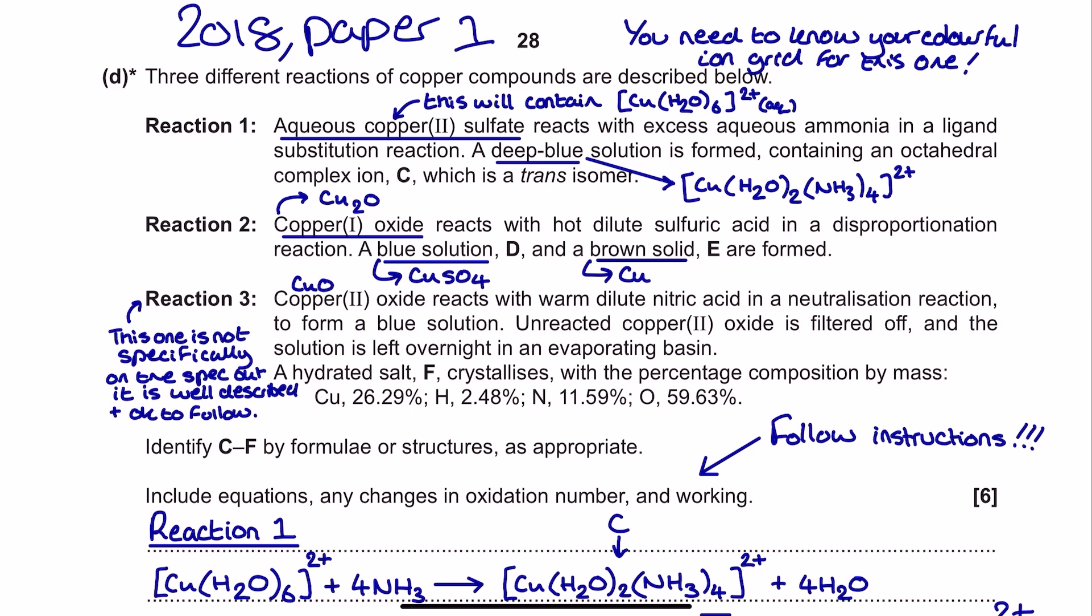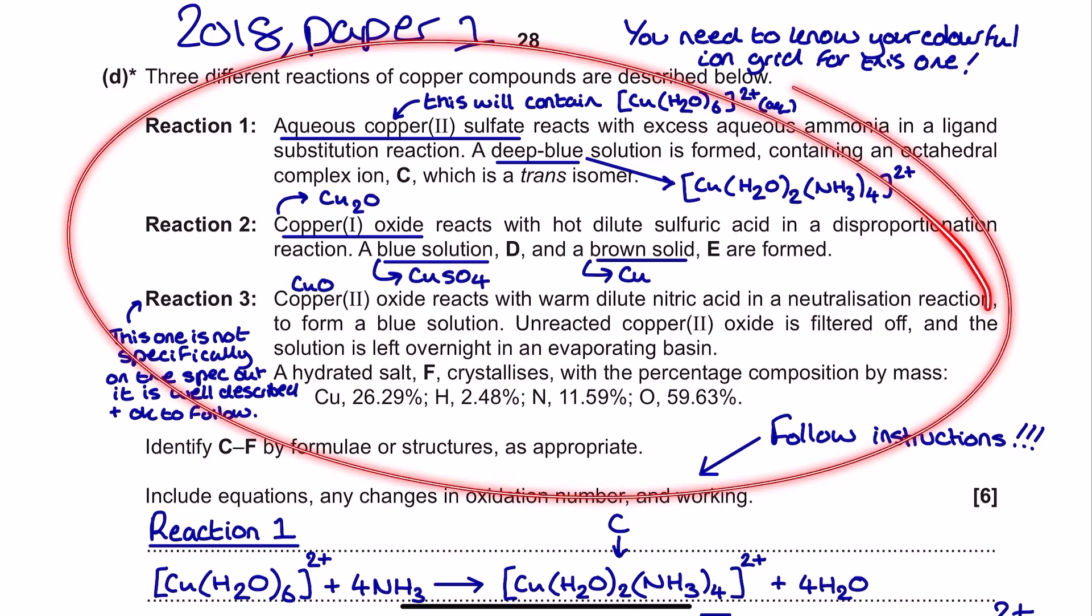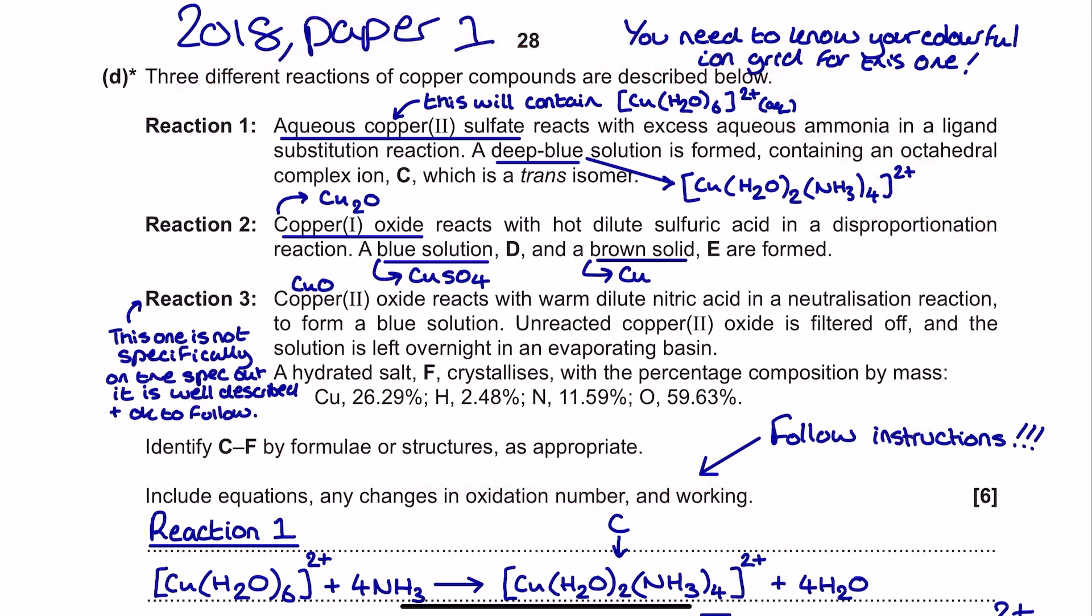Okay, like I said, this is from the OCR A specification. It's actually from the 2018 Paper 1 exam, and this level of response is all about the copper transition element. You'll see here that I have got this full description here of all my annotations, and I'm going to take you through everything I've got here.